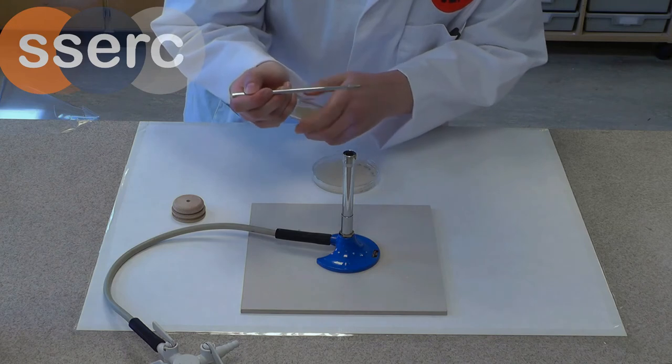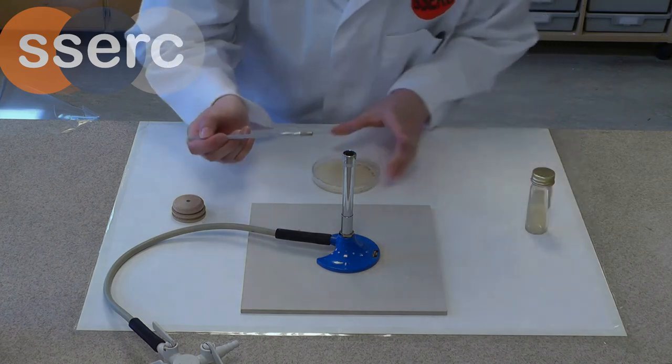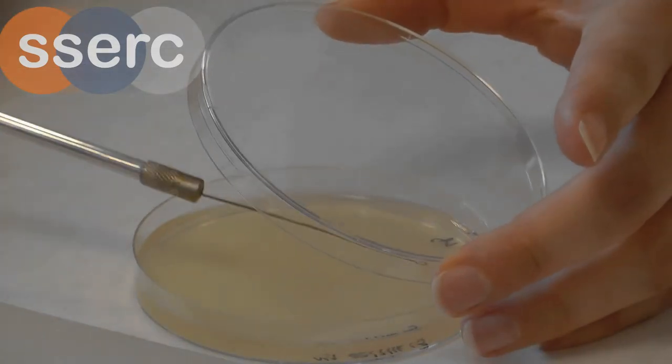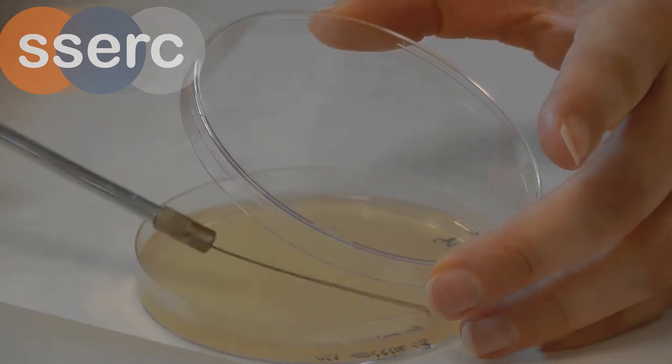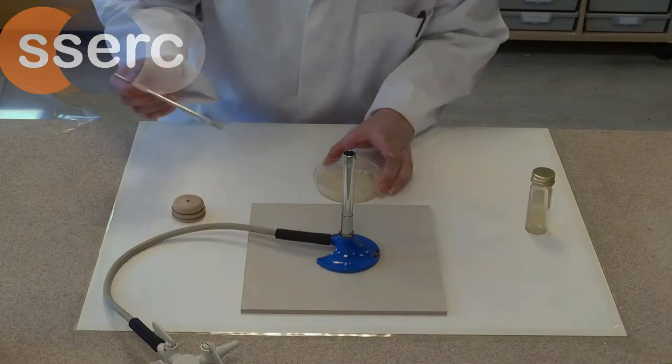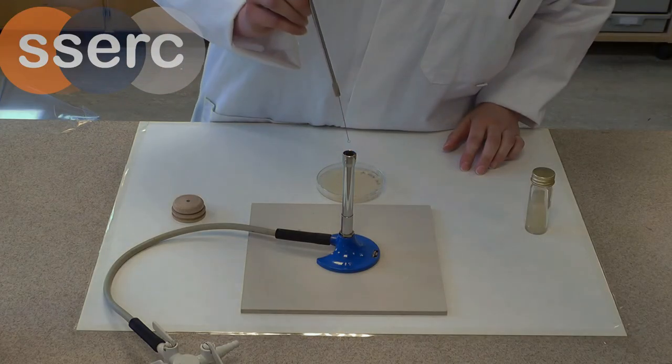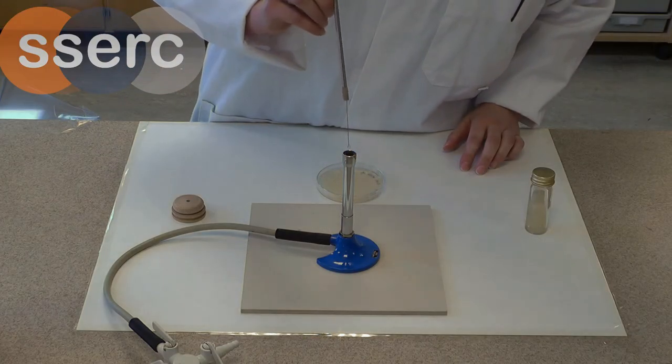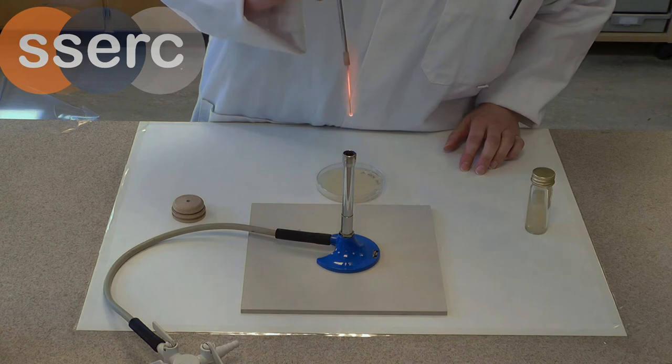Flame the neck of the bottle again before you put the lid on. Lift the lid of the petri dish just enough to get the loop in and make a simple streak across the surface of the agar. Finally, flame the loop again.